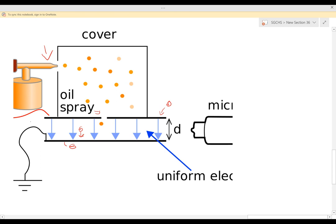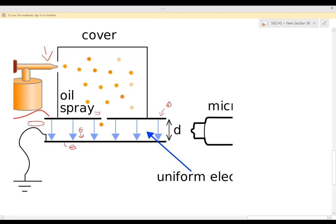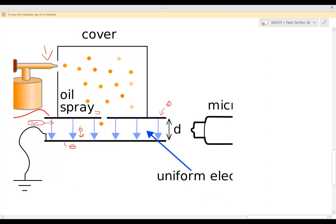Now what he also did was he would fire x-rays into this area of the uniform electric field. What that did was it ionized the air, and when the air is ionized, it now has electrons floating within this area. These electrons would attach themselves to the oil drops.